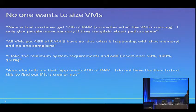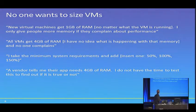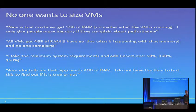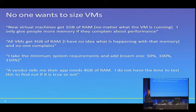The second quote I only heard once: all new virtual machines get four gig of RAM, and no one complains. I sat there thinking, what sort of budget do you have that you can just waste resources like that? The last point: a vendor tells me their app needs four gig of RAM, and I don't have the time to test whether it's true. In my experience, many Microsoft applications run happily with far less memory than their listed minimum — because the minimum often just means the smallest amount of memory in their test lab.